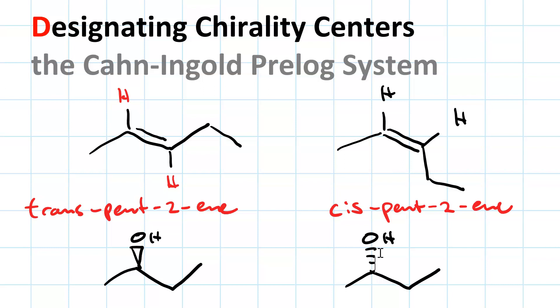Seriously, I don't even want to write out those descriptions. There's got to be an easier way. And guess what there is, and it's called the Cahn-Ingold-Prelog system.